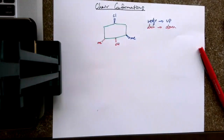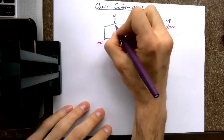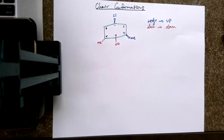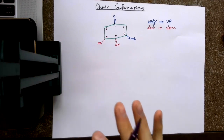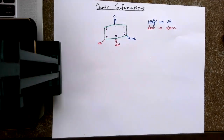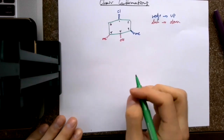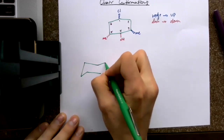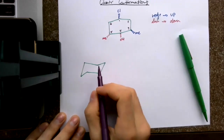Whenever I am doing a chair conformation, I label and I start numbering. I go to the top and I rotate clockwise and label to number six. I do this every single time, no matter what problem I have. If I've ever given a cyclohexane, I always number one through six because I'm anticipating I'm probably going to have to draw a chair conformation. So when I draw my chair, I label it in the top right.